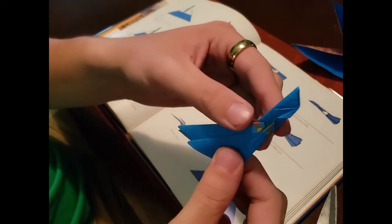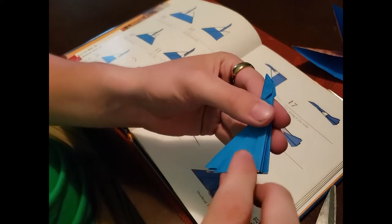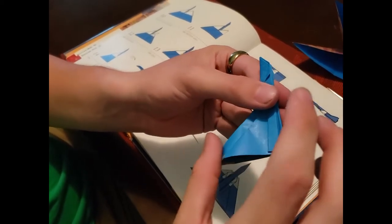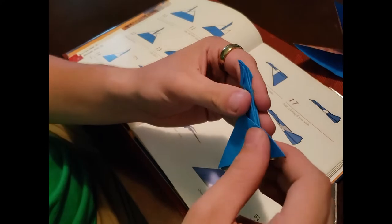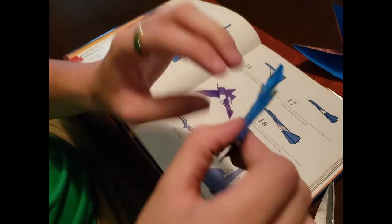So now this is what you have. And you're going to rotate it. And you're going to take your wings, these two. You're going to take the top one and fold it directly up on both sides.